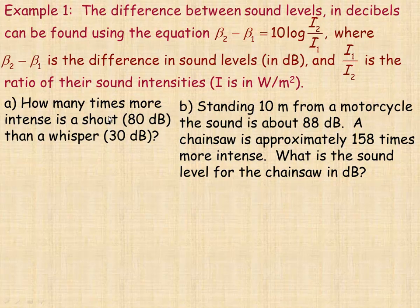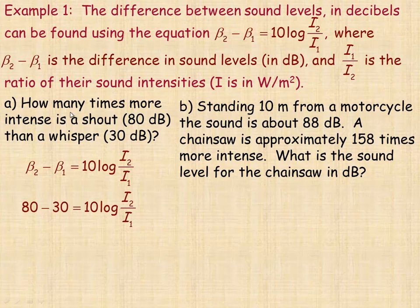So in the first example, it says how many times more intense is a shout at 80 decibels than a whisper at 30. And so here's the formula, and the 80 and the 30 are the β₁ and β₂. And so when it says how many times more intense, we're actually asked to calculate this ratio, to determine this ratio, I₂ over I₁. So that's what we're solving for.